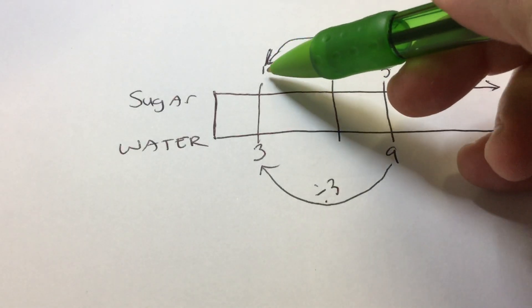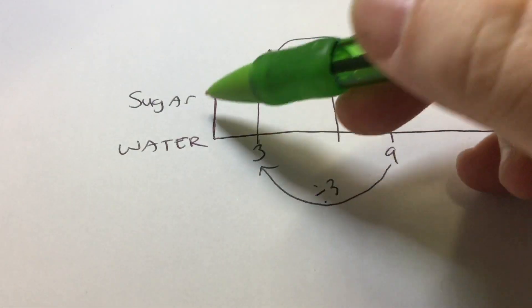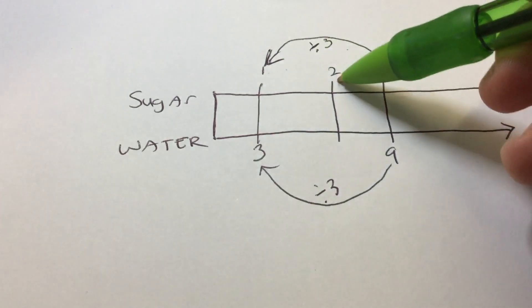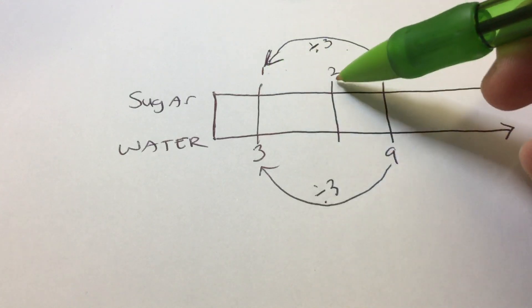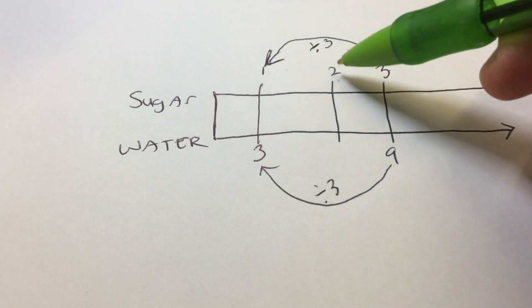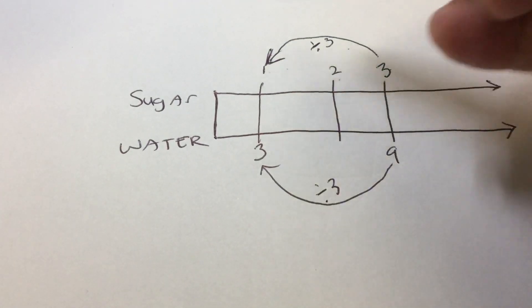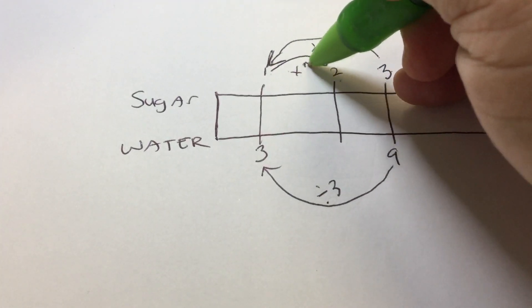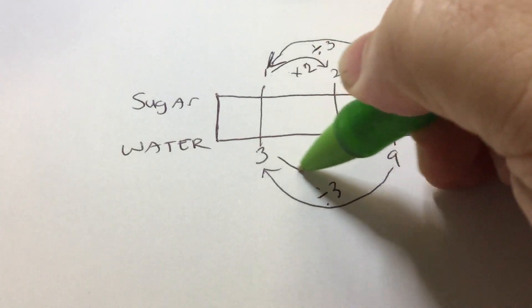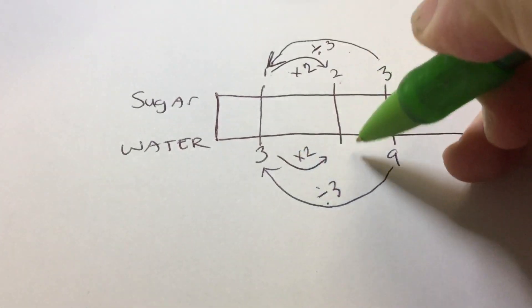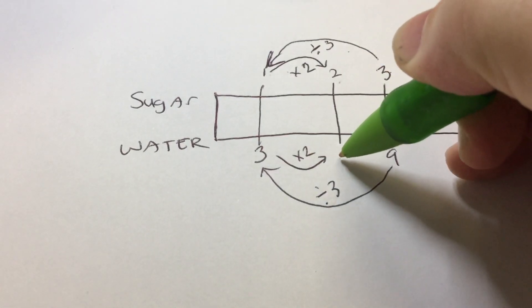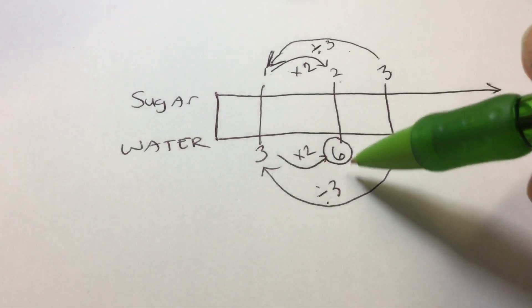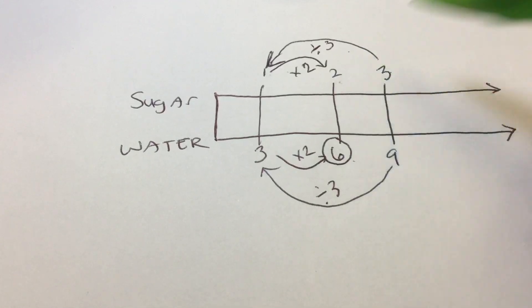Now that we have a unit rate of one to three — one cup of sugar for every three cups of water — we can find the answer for two cups of sugar. Going from one to two is very simple: how do you go from one to two? That's correct, multiply by two. And if we do this on the top, we have to do it on the bottom. Three times two is six. So we found our answer: we're going to need six cups of water for every two cups of sugar.